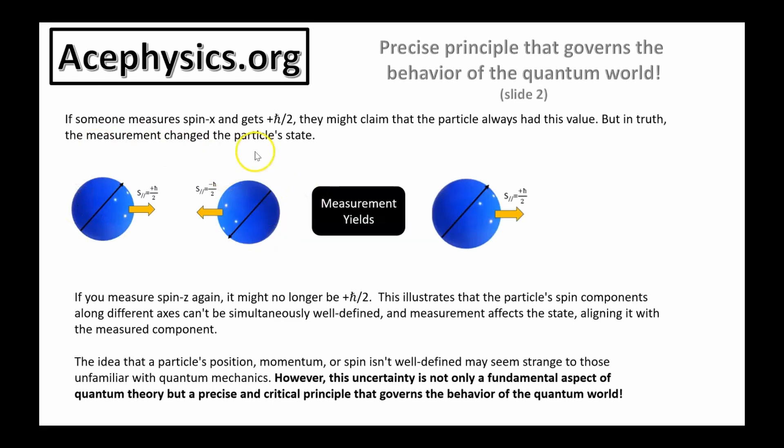This corresponds to spin up. If you're in this state and you measure the spin z again, it might no longer be h bar over two. This illustrates that the particle's spin components along different axes can't be simultaneously well-defined. And measurement affects the state, aligning it with the measured component. The idea that a particle's position, momentum, or spin isn't well-defined may seem strange to those unfamiliar with quantum mechanics. However, this uncertainty is not only a fundamental aspect of quantum theory, but it's a precise and critical principle that governs the behavior of the quantum world. This uncertainty is the whole concept behind quantum mechanics.